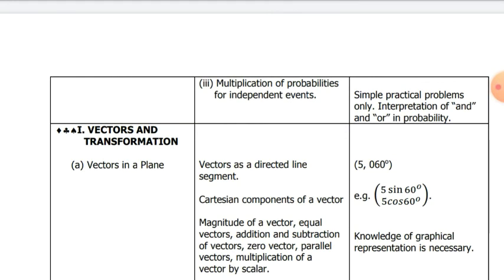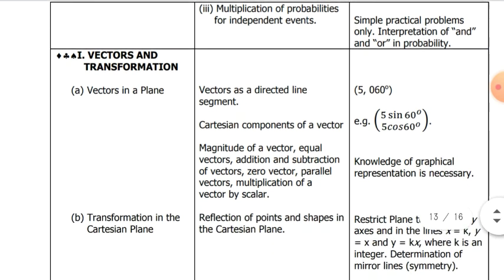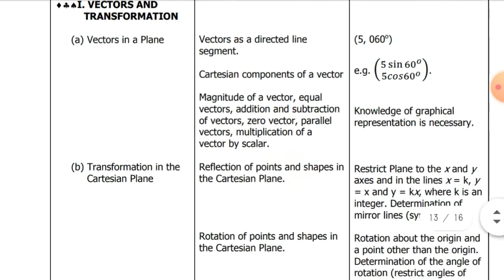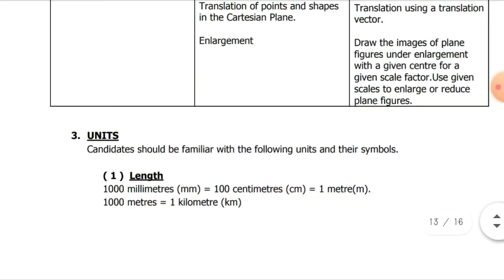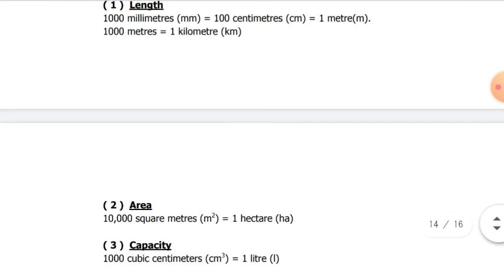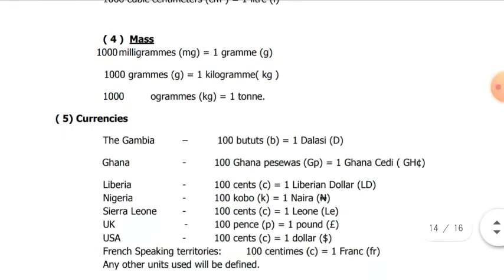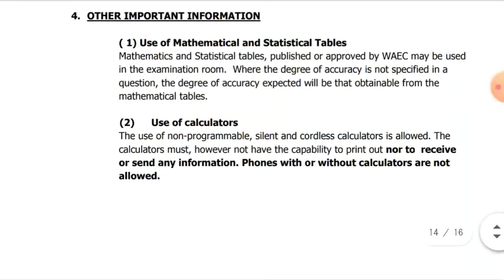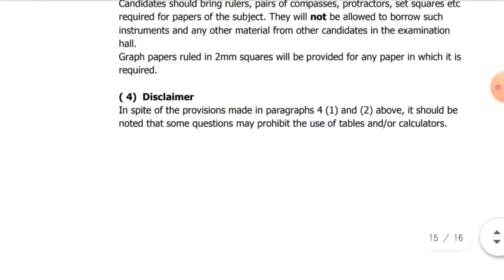Vectors and transformation, which has to do with vectors in a plane, transformation in a Cartesian plane. You should be familiar with lengths: 1000 millimeters equals 100 centimeters equals 1 meter. Study areas, capacity, currencies, and others.